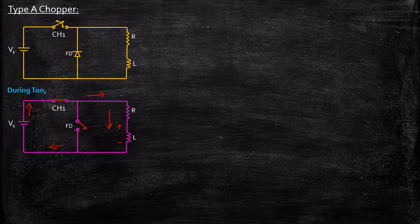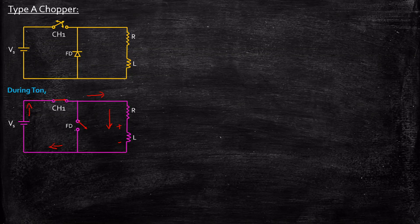The freewheeling diode is open-circuited — there is no conduction happening. The reason is because negative is connected to the anode of the diode, and positive is applied across the cathode of this particular diode, so it is reverse biased and open-circuited. In this case, current is flowing from the source to the load and the inductor is charging during turn-on.